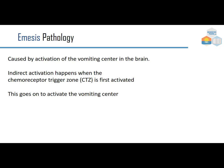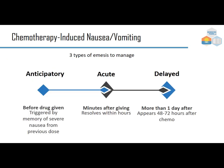Emesis is usually caused by activation of the vomiting center in the brain. Indirect activation occurs when the chemoreceptor trigger zone (CTZ) is first stimulated, then activates the vomiting center. Three types: anticipatory emesis (triggered by memory of prior nausea before the drug is given), acute emesis (minutes after administration, resolves within hours), and delayed emesis (48–72 hours after chemotherapy).